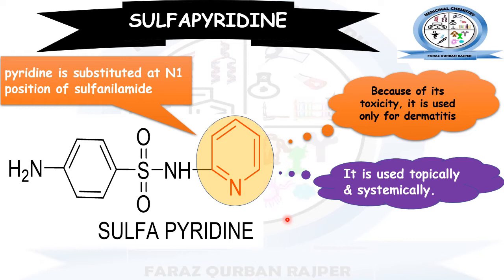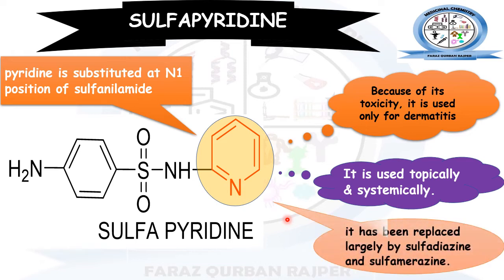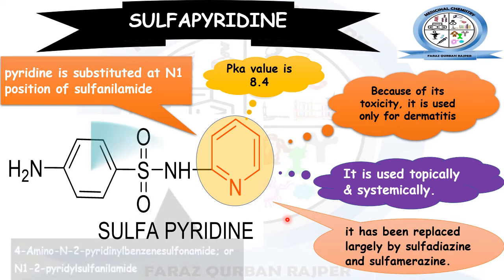Its formulations are available for use topically as well as systemically. This sulfapyridine drug has been largely replaced by other classes of drugs like sulfadiazine and sulfamerazine because of their high toxicity. The pKa value of sulfapyridine is 8.4.